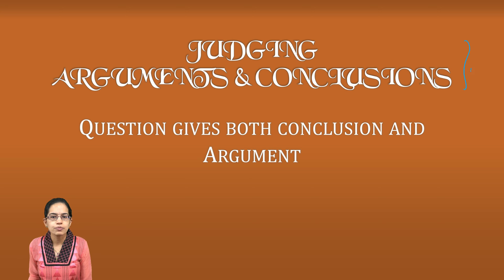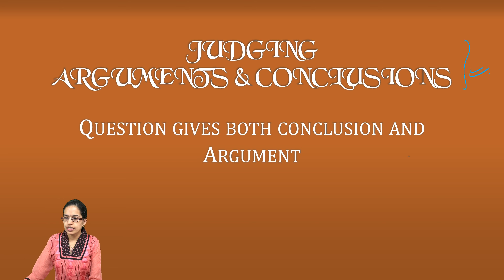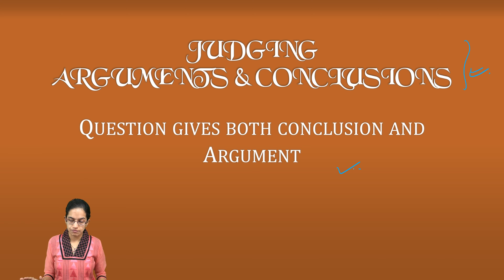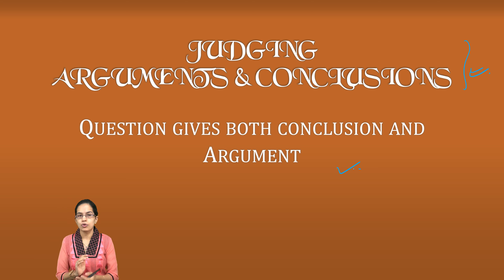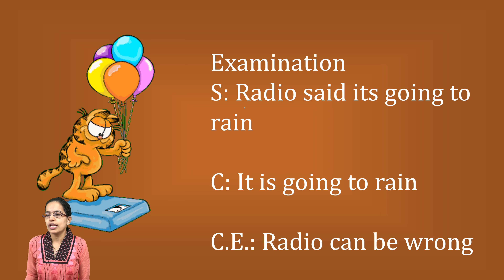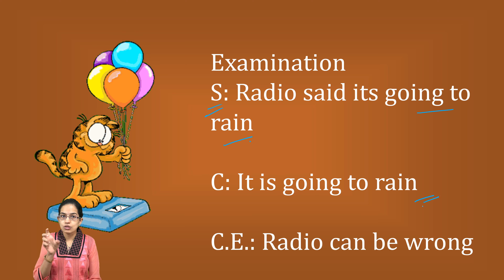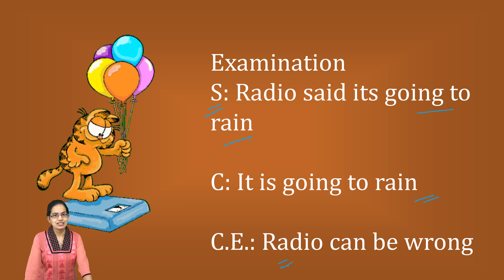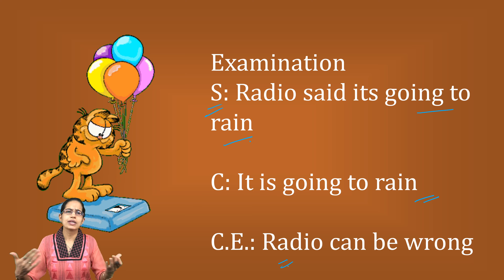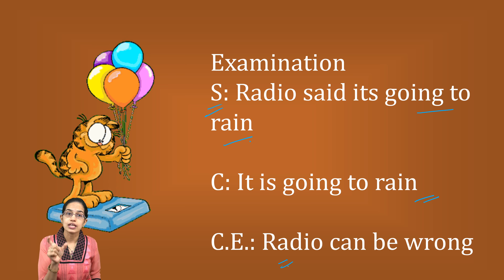Whenever you are judging an argument and conclusion problem, what is very important is that both are hidden in the statement itself. Be it argument problems or conclusion problems, the answer lies within the question. You need not bring in extra information. For example, if the statement says the radio says it's going to rain, so I conclude it's going to rain — this conclusion could in reality be challenged because the radio forecast could be incorrect. But based on what the statement says, this is what we can conclude to the best.